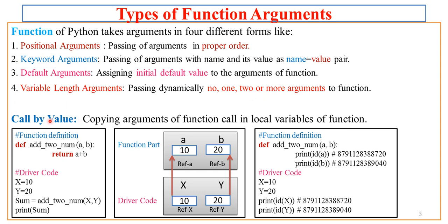Now let us first understand call by value, so that we can understand each argument type more properly. Call by value means copying the arguments of the function call into the local variables of the function. Let us understand this with a simple example. I have a function definition: def add_to_num, which takes two parameters a and b and returns their addition.